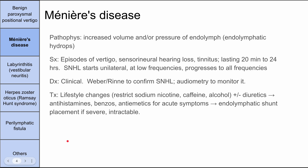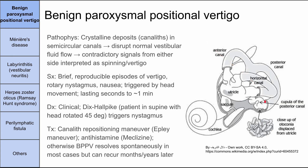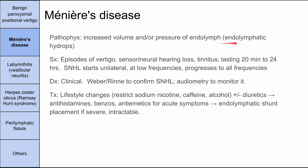Next is Meniere's disease. The pathophysiology is increased volume or pressure of endolymph in the semicircular canals — also called endolymphatic hydrops. Symptoms include episodes of vertigo lasting about 20 minutes to 24 hours, sensorineural hearing loss, and tinnitus. The sensorineural hearing loss starts unilateral at low frequencies and can progress to all frequencies.